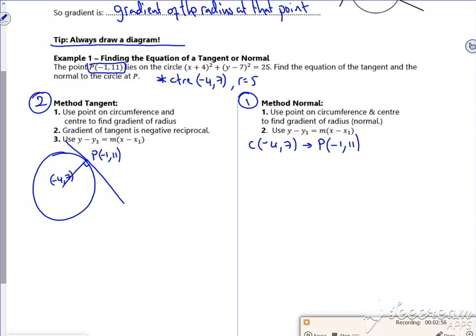So if I get the gradient, that'll be 11 - 7 over -1 - (-4). So the gradient, I'm just going to involve GCSE, I have to do two lines there. So what's that going to be? That's going to be 4/3.